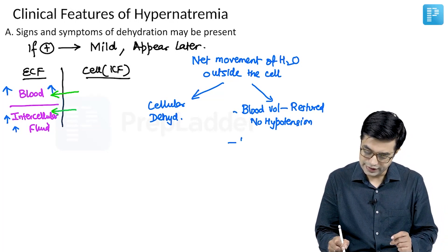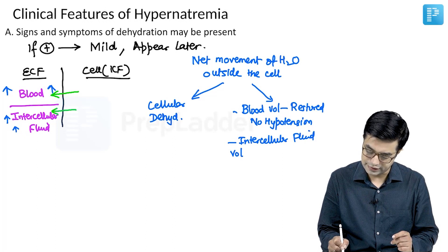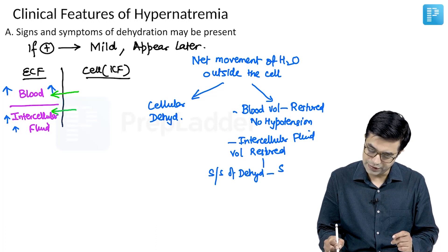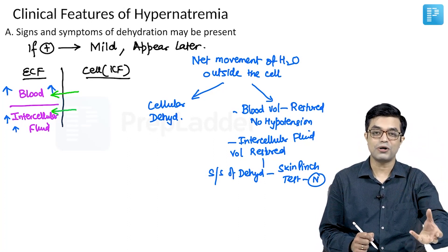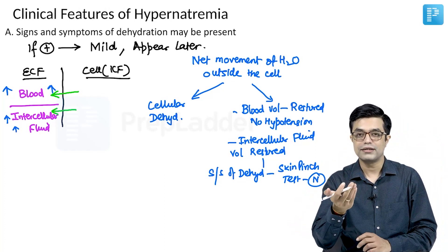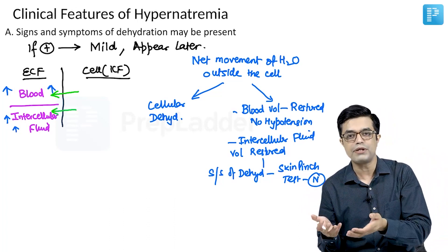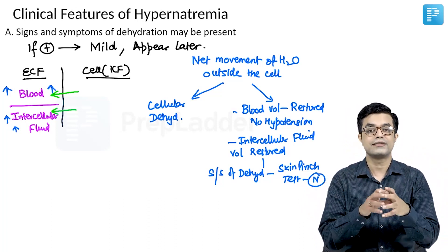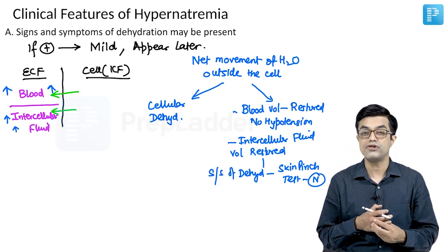Secondly, because the intercellular fluid volume is better restored, the usual signs and symptoms of dehydration — for example, the skin pinch test — will be normal. The patient is losing water from cells, but the signs of dehydration will be minimal or absent. The cells are dying from lack of water but the patient is not presenting with symptoms, so they come to attention late. Signs of dehydration may be present but they are late in presentation, and that is why hypernatremia is such a dangerous type of dehydration.